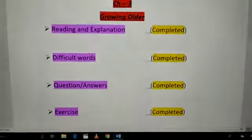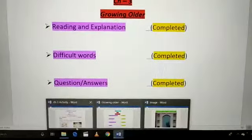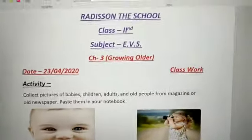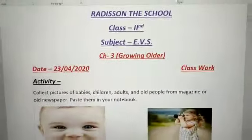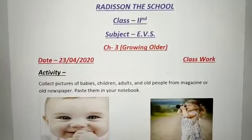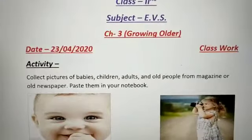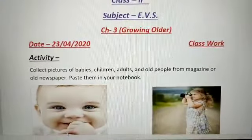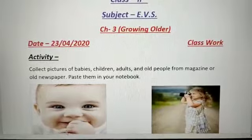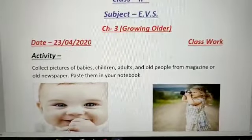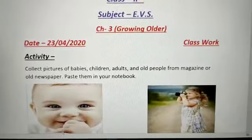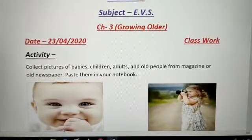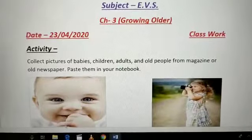And today we are going to do an activity of chapter 3, Growing Older. Your activity is: Collect Pictures of Babies, Children, Adults and Old People from a Magazine or Old Newspaper. Paste them in your Notebook.